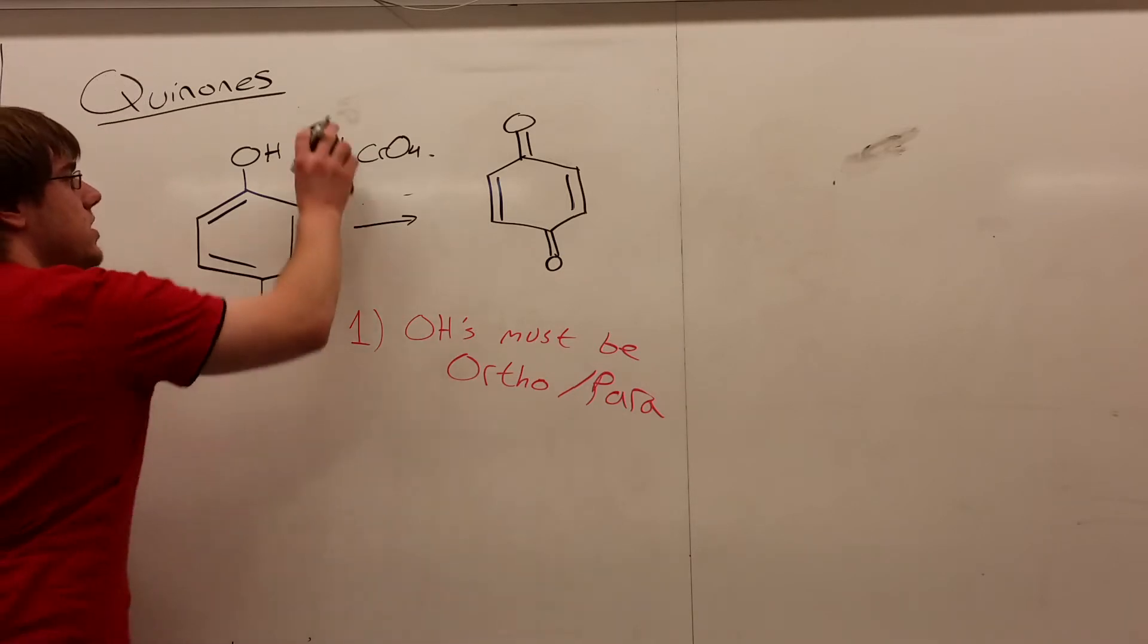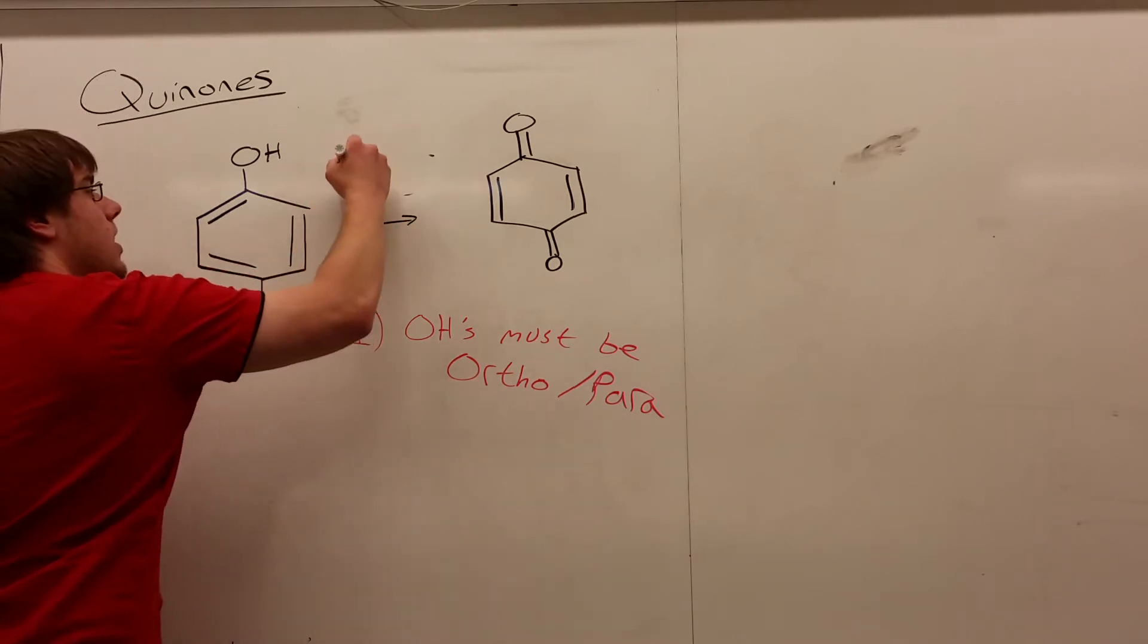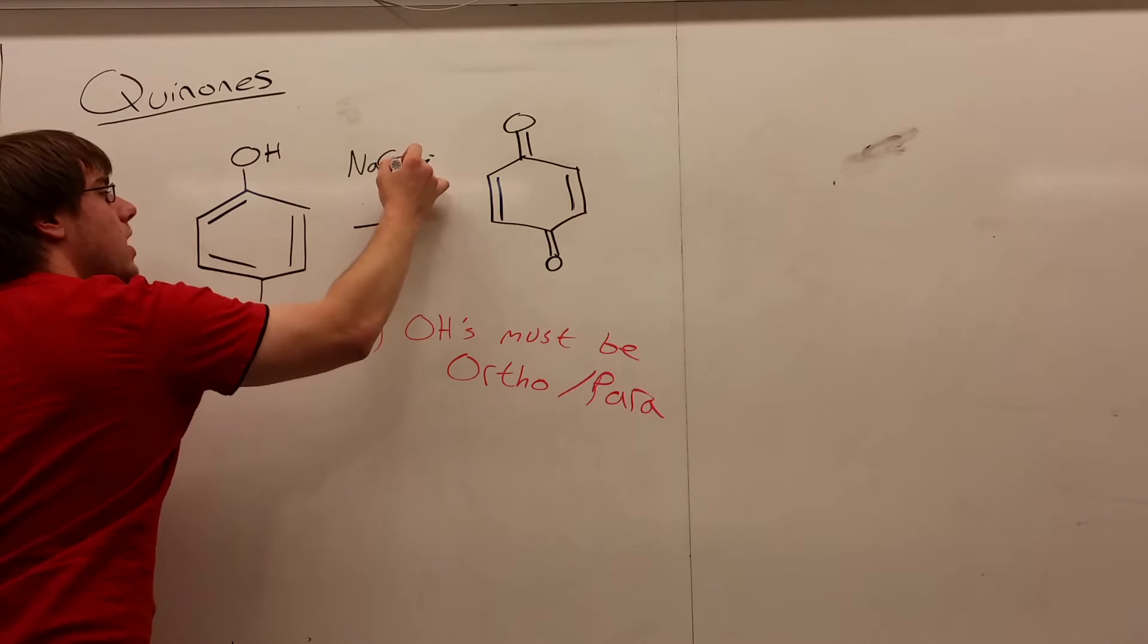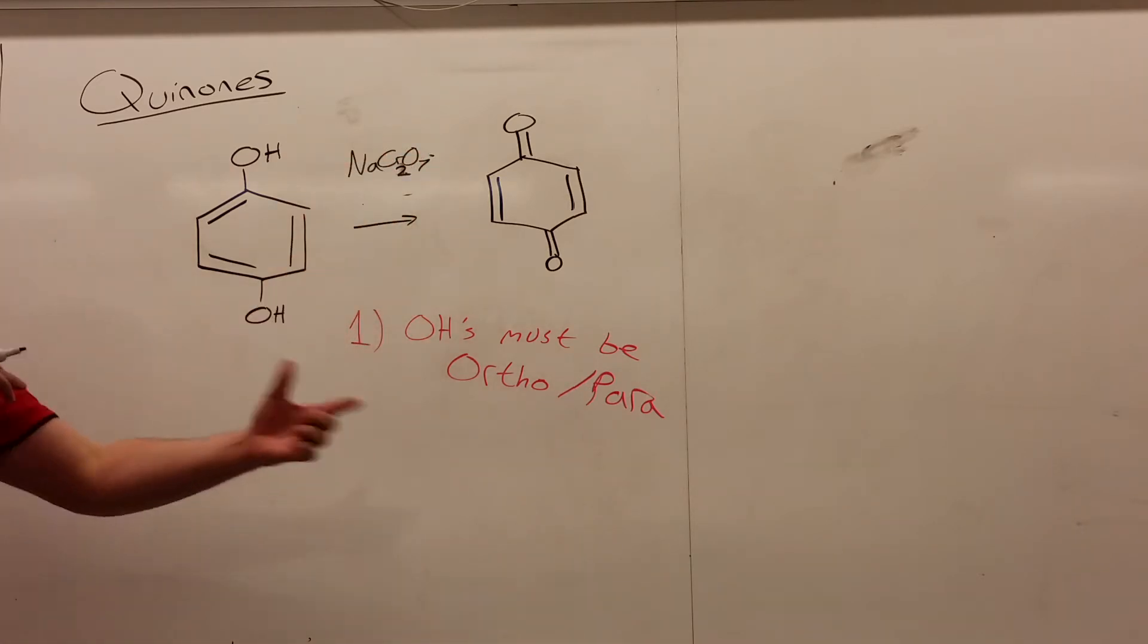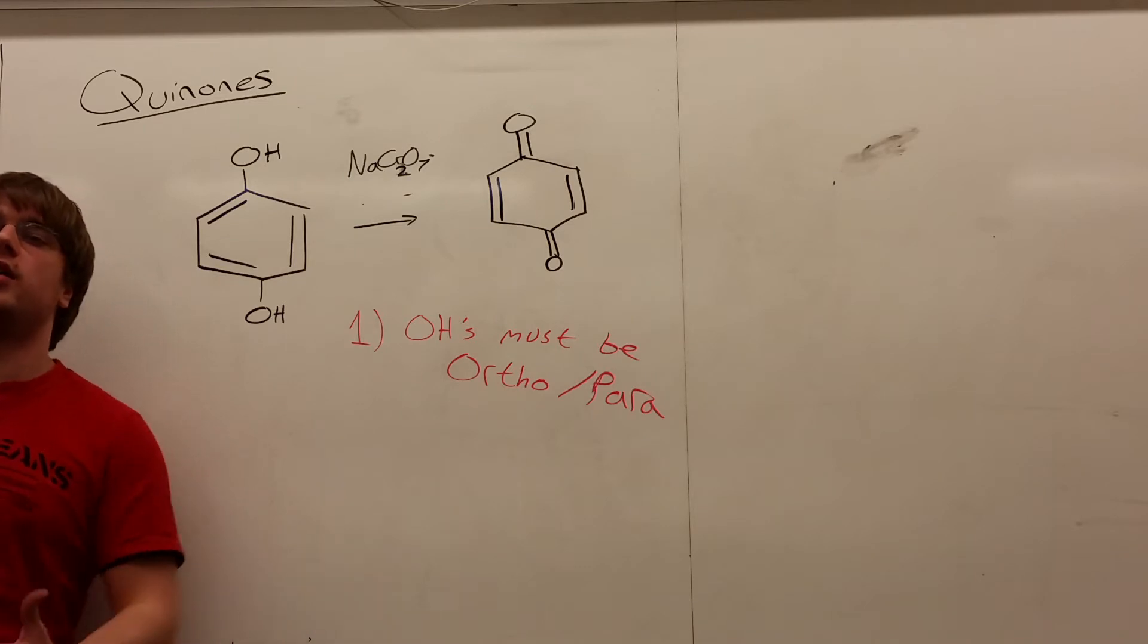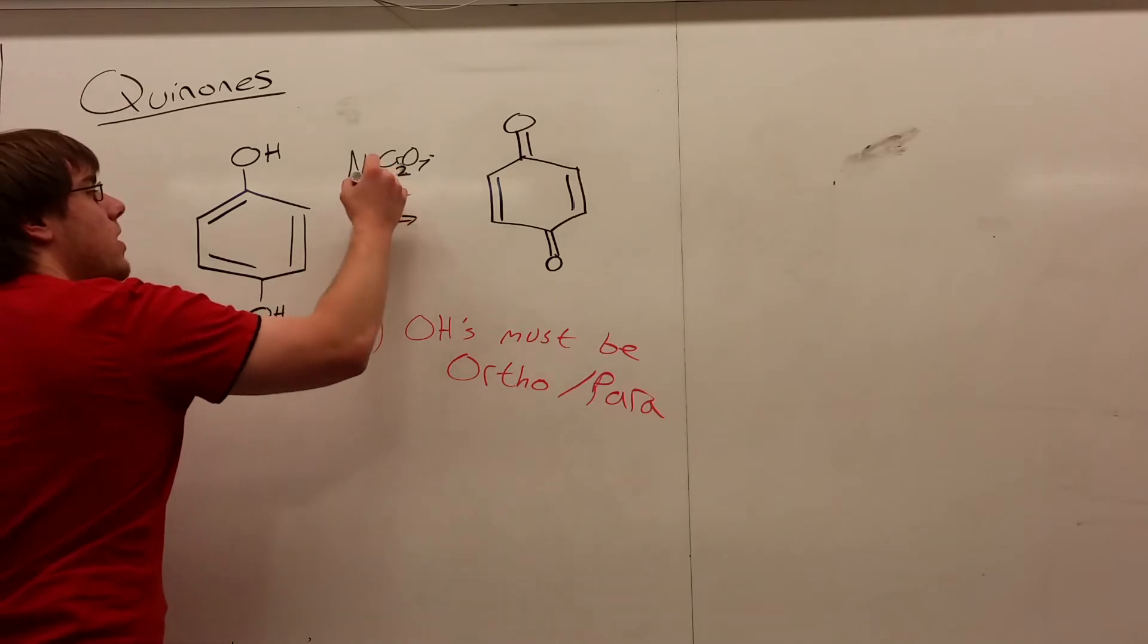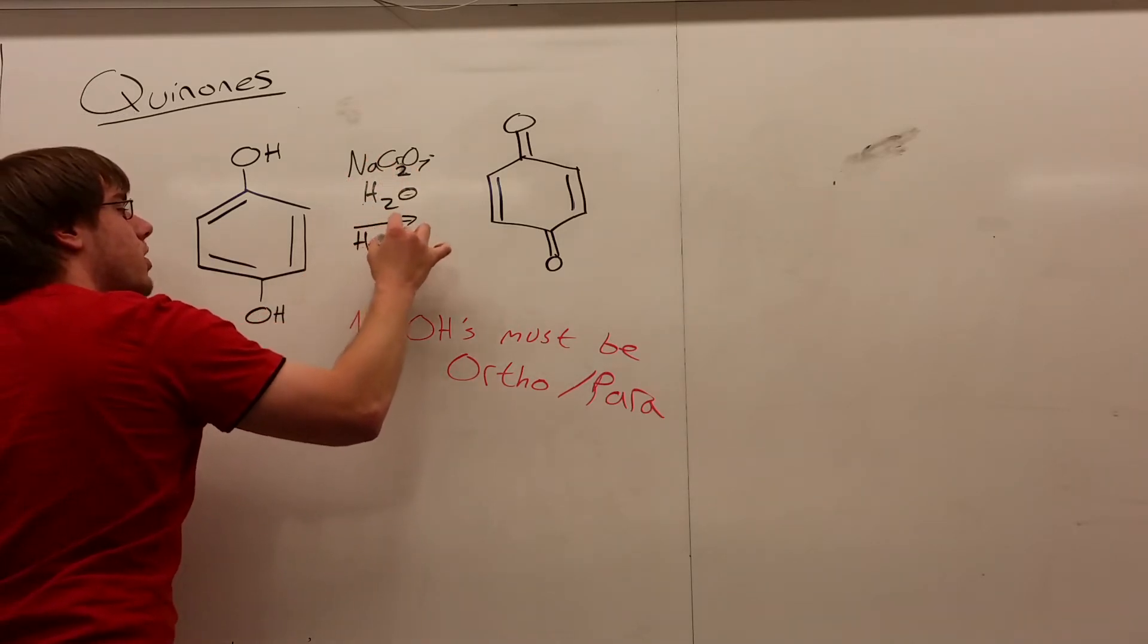But another way you can see this is Na2Cr2O7. Again, you see chromium. The second you see Cr, think oxidizing agent because that's the only time we use it in this course as an oxidizing agent. And then it was coupled with H2O and H2SO4.